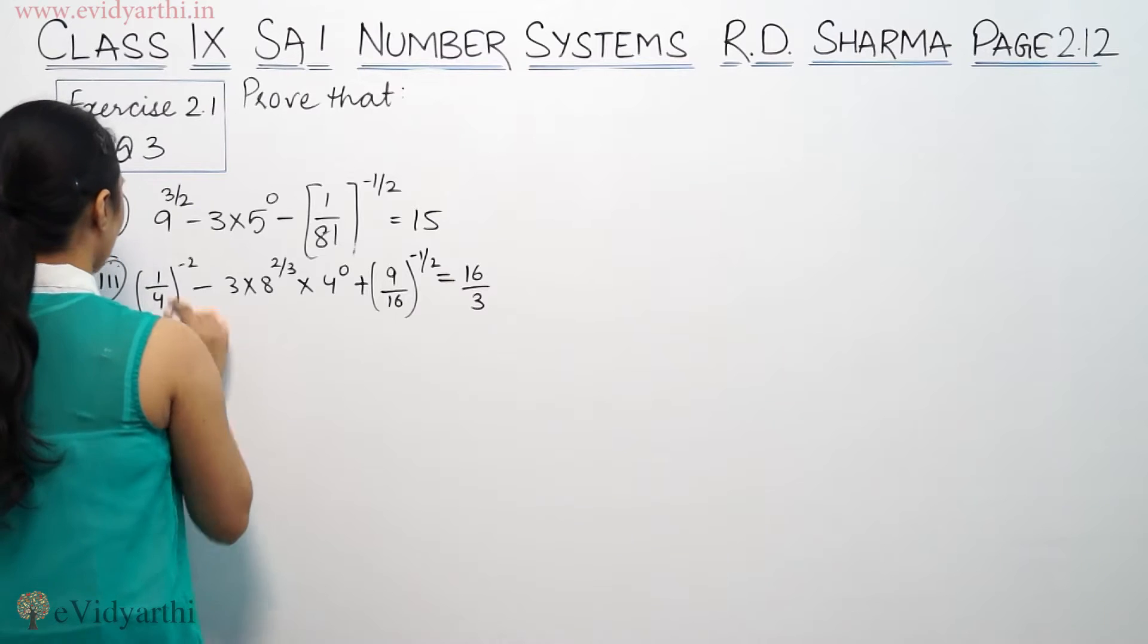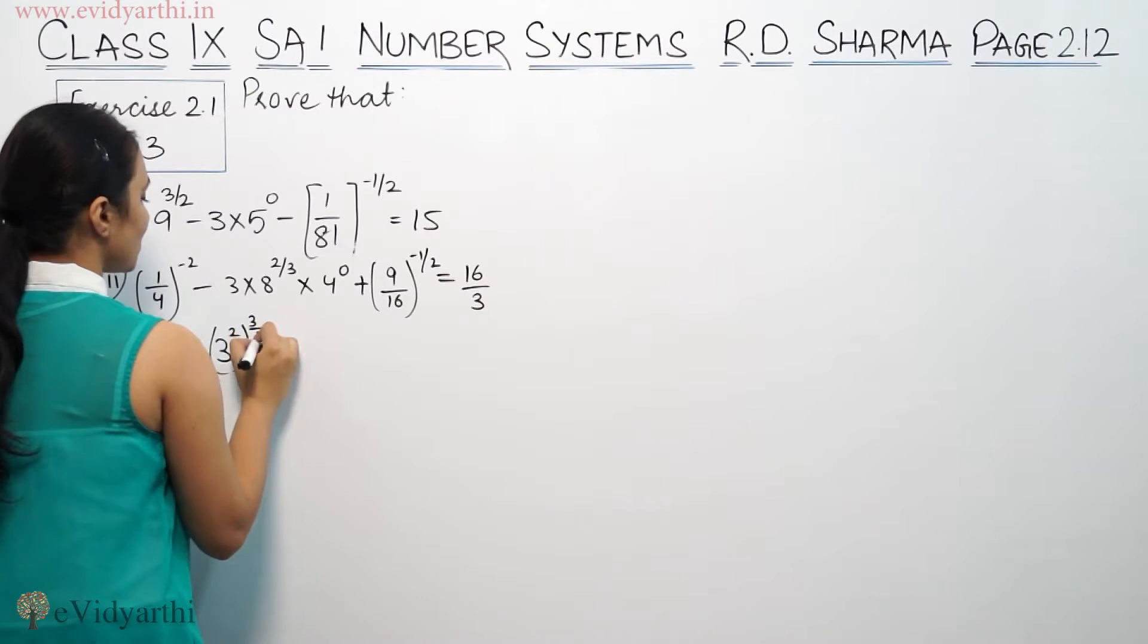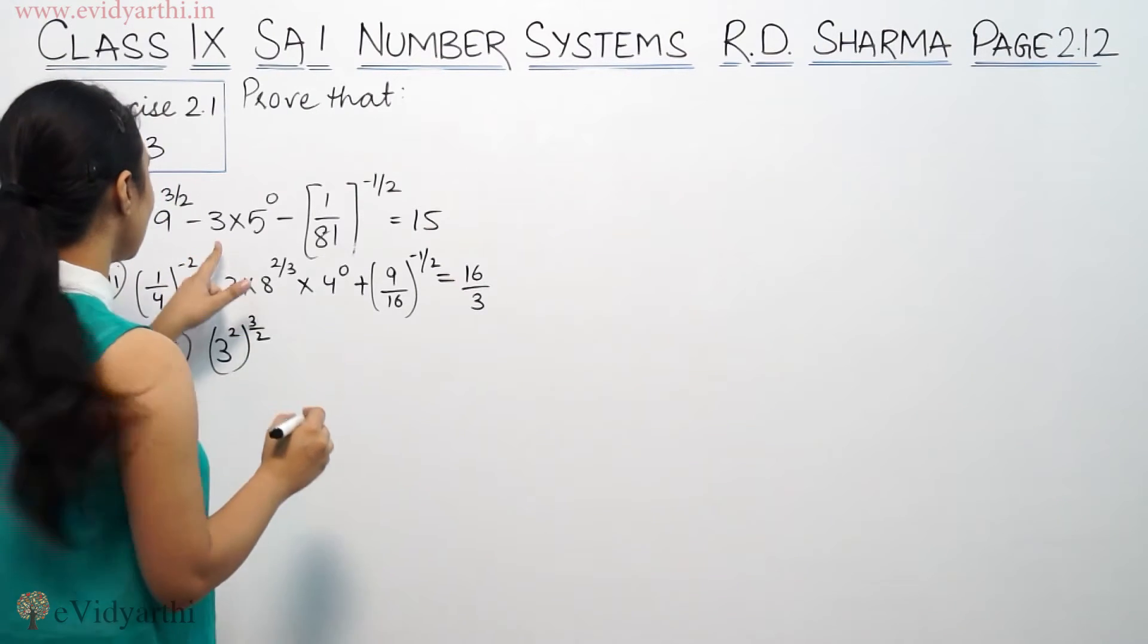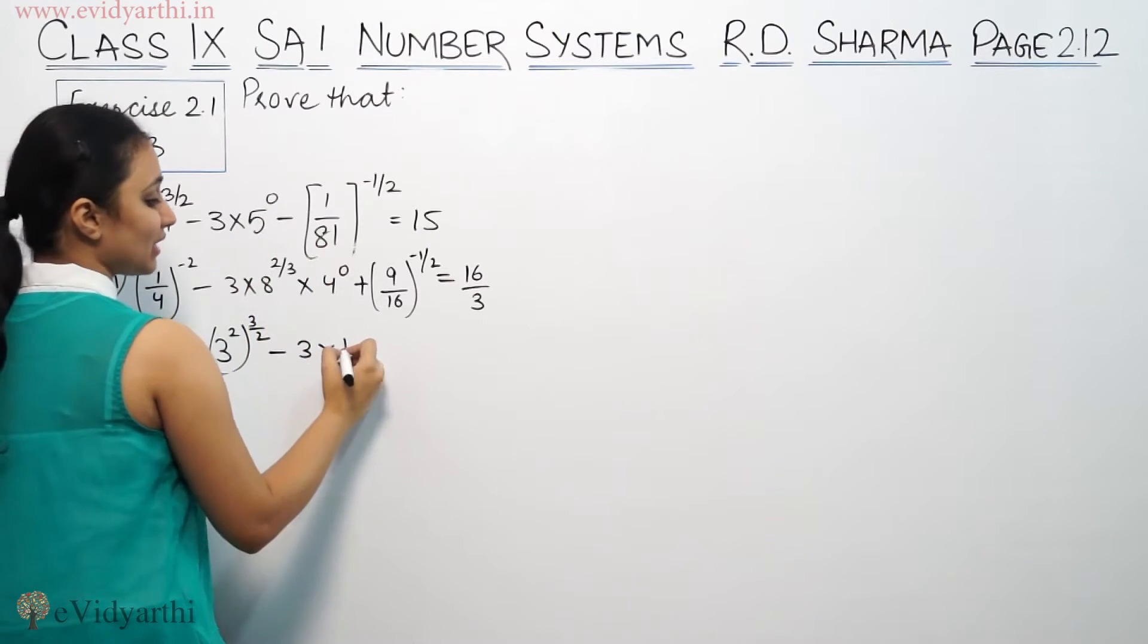So, we have the second part, 9 to the power 3/2. We have 3 square, 9 to the power 3/2 as it is. Minus 3 into, if something's power 0, it means 1.